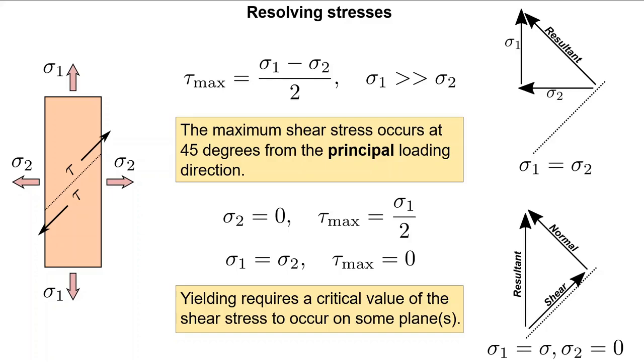In a uniaxial tensile test, the maximum shear stress occurs on a plane which is oriented 45 degrees from the loading direction, and Sigma-2 is zero. Keeping Sigma-2 zero, depending on the orientation of any arbitrary plane, shear stress will range between some maximum value at 45 degrees from the loading direction and to a minimum at 90 degrees. In order to achieve yielding, and therefore some movement of dislocations, some critical value of shear stress needs to occur on some planes.